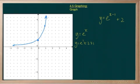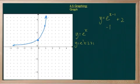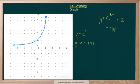So there's my graph. The transformations are going to be: we're going to go right 1, up 2.